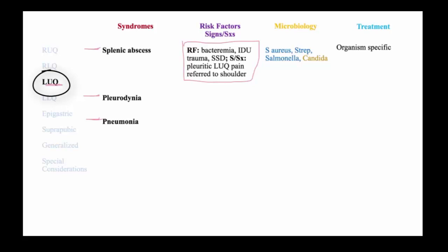Signs and symptoms of splenic abscess include pleuritic left upper quadrant pain that may be referred to the shoulder. Microbiology includes Staph and Strep, but uniquely, Salmonella seems to be a more common pathogen with splenic infections, and occasionally candidiasis can seed to the spleen. Treatment is organ-specific and may require splenectomy.